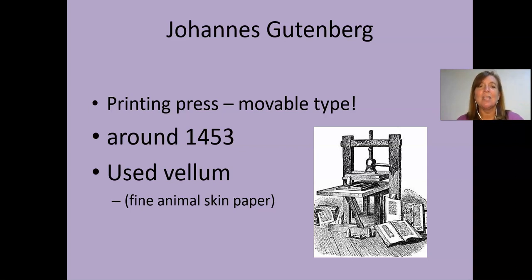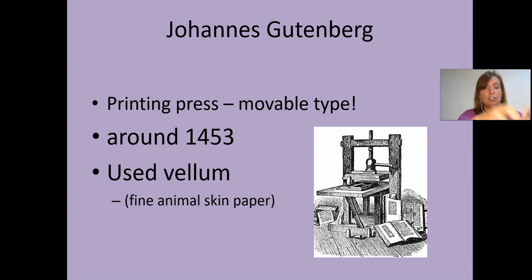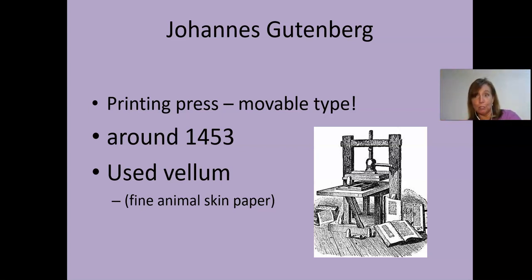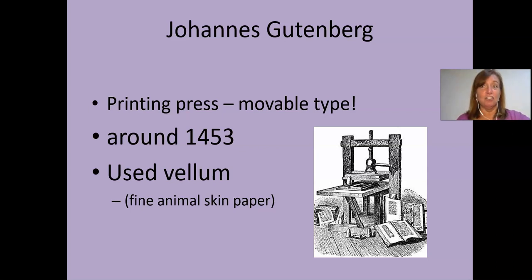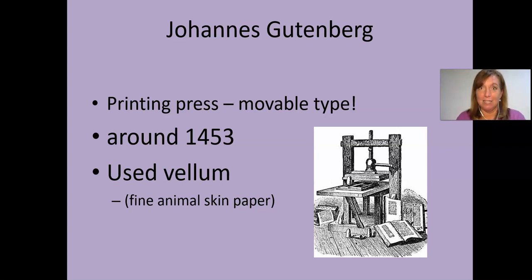What Gutenberg did was develop a machine a lot like block printing, but it prints all the blocks at the same time. You lay out the blocks in a tray, slather them with ink, put a piece of paper down, and pull a press down on top of the blocks. You have a printed sheet of paper — an entire sheet all at once — and then you do the same thing again, printing sheet after sheet. This was significant because up to this point, people didn't really read. There weren't books around anyway.